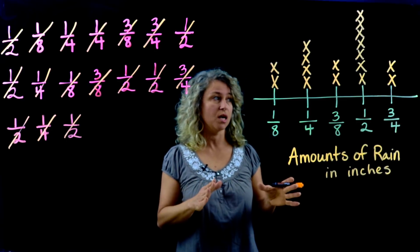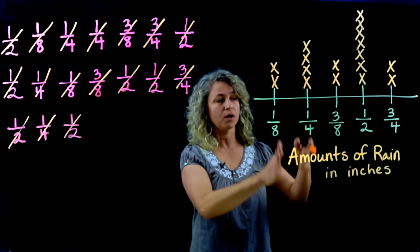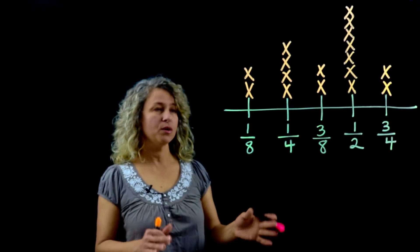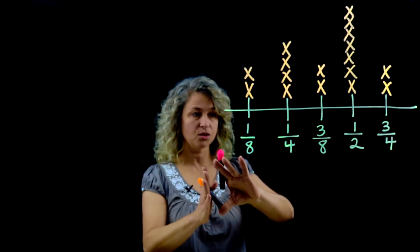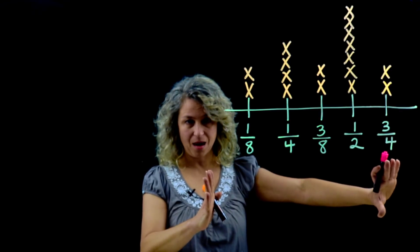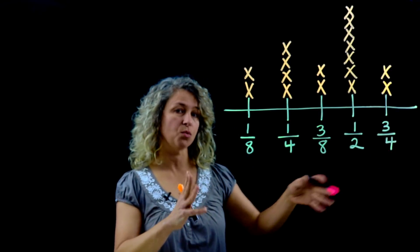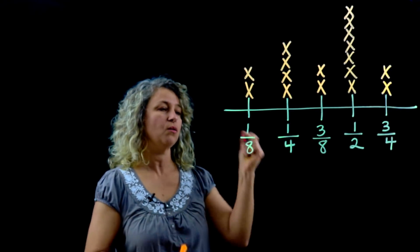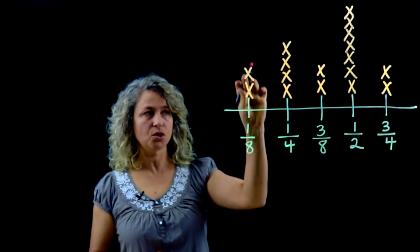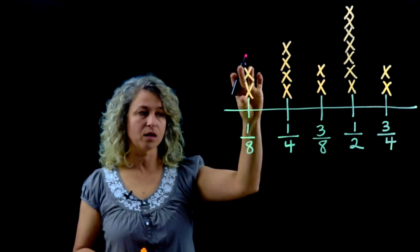Now what we want to do is find the average. We've got to find the totals for each amount. We will find the total for each amount, and then we'll find the total of all the amounts, and then we'll redistribute those equally.